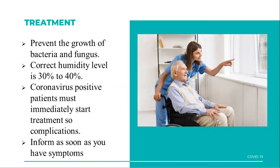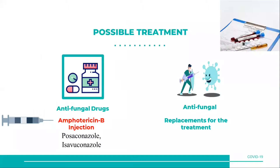Corona-positive patients must immediately start treatment. If they have any complaints or problems, they must report immediately and inform as soon as they have symptoms — do not delay going to hospital. From the early stages, primary treatment should be taken. Prevention is better than cure. Antifungal drugs will be given, including injections such as Amphotericin B, along with tablets. Apart from antifungal drugs, replacement treatment is also given.